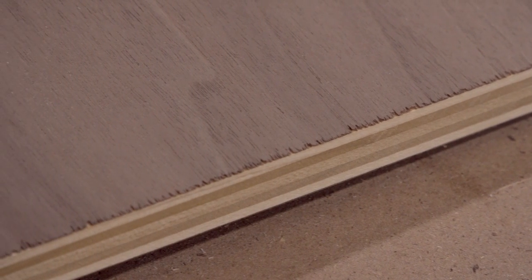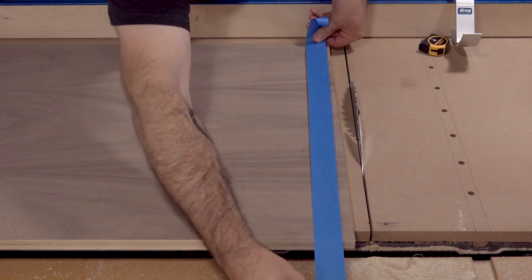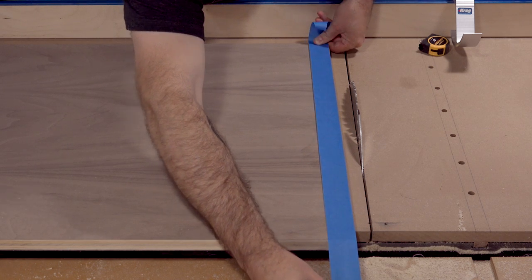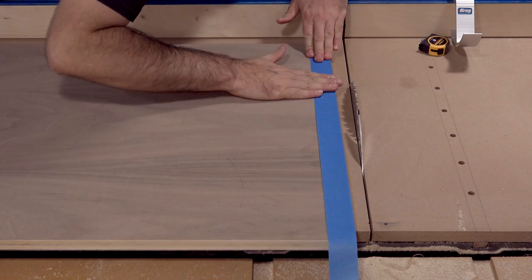Cross cutting plywood with a combination blade almost always results in tear out, and I find the easiest way to prevent that is to just cover the plywood with painter's tape.